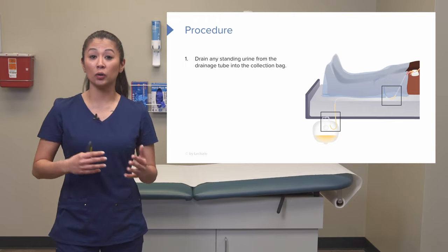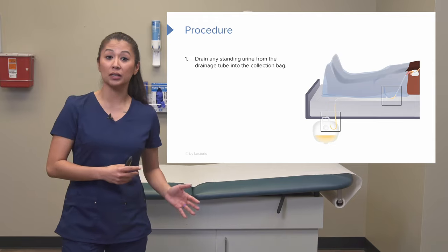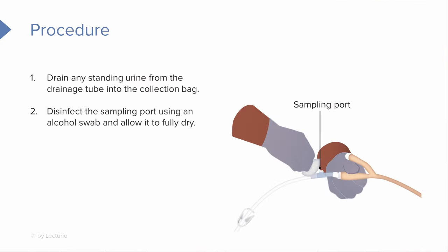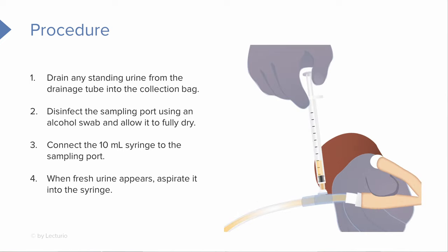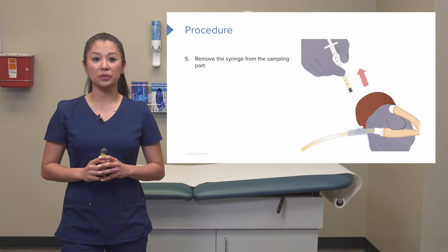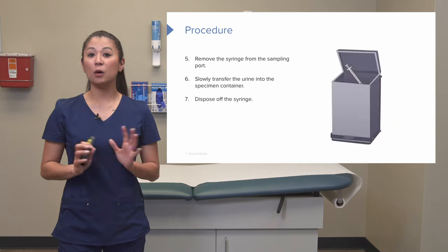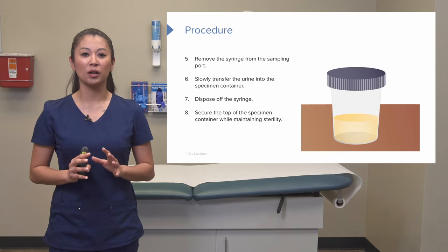If there's some extra urine in the drainage tubing, we want to drain any standing urine from the drainage tube down into the collection bag. Once we've done this, we can take those alcohol pads and disinfect that port using an alcohol swab, then allow it to fully dry. Now we can connect our 10 ml syringe to the port and pull back on the plunger. When we see fresh urine, we can aspirate the urine using that syringe. Remove the syringe from the sampling port and slowly transfer the urine into the specimen container. Dispose of the syringe and secure the top of the specimen container while maintaining sterility.